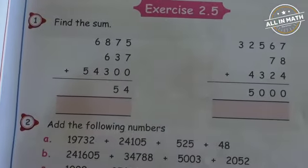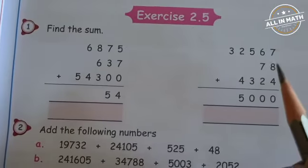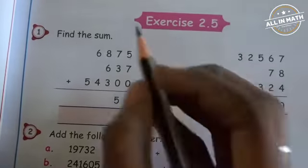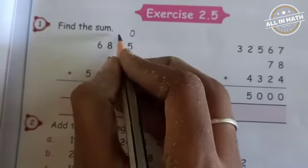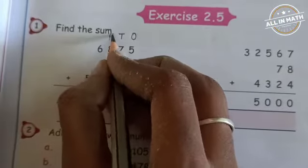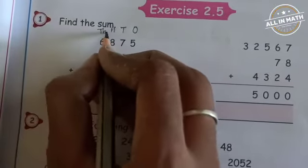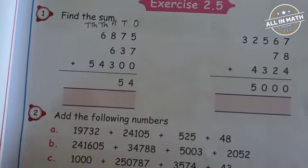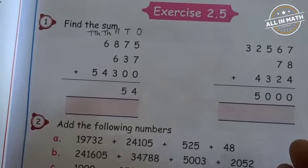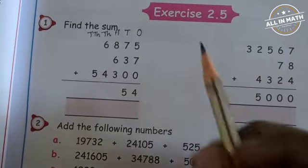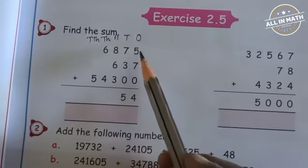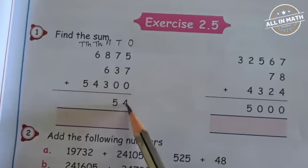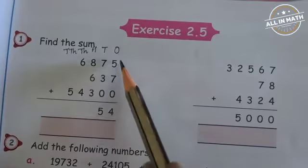First, I am going to put the place values of the given number: 1's, 10's, 100's, 1000's, 10,000's. Clear, children? Now I am going to add from the 1's place. What are the numbers in the 1's place? 5, 7, 0, 4. I am going to add all these numbers.